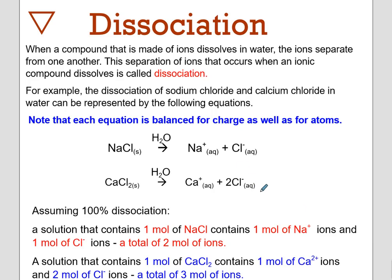Now let's talk about dissociation. When a compound made of ions dissolves in water, the ions separate from one another. This separation is called dissociation. When sodium chloride and calcium chloride are placed in water, these processes occur. Water doesn't really need to be written - it's understood. NaCl forms sodium and chloride ions in a 1:1 ratio. CaCl2 yields calcium and chloride ions in a 1:2 ratio.